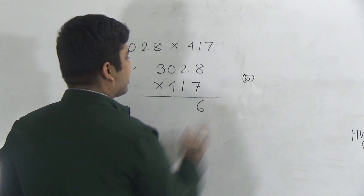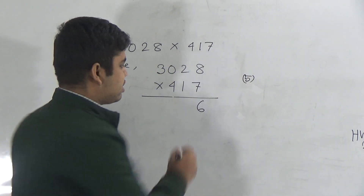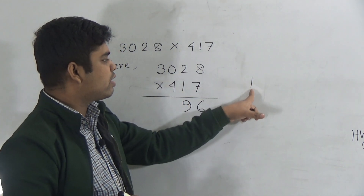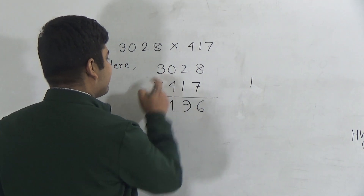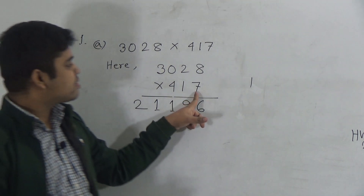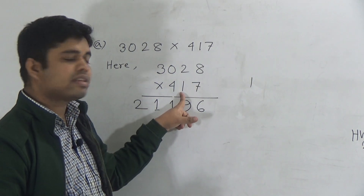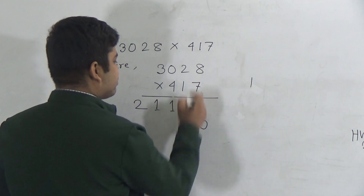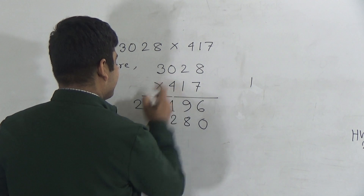7 twos are 14, plus 5 carried is 19 — write 9, carry 1. 7 zeros are 0, plus 1 is 1 — write 1. 7 threes are 21 — write 21. The ones place digit is done. Next we multiply 3028 by the tens place digit, which is 1: 8 ones are 8, 2 ones are 2, 0 ones are 0, 3 ones are 3.